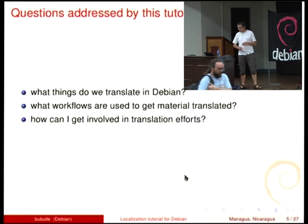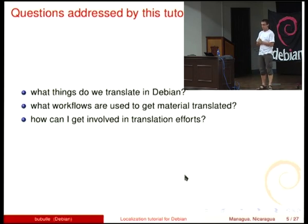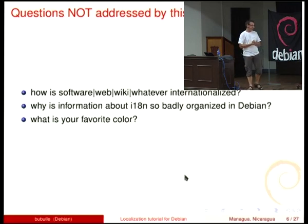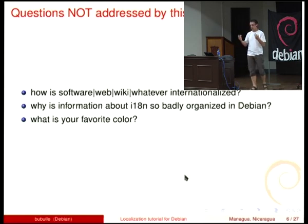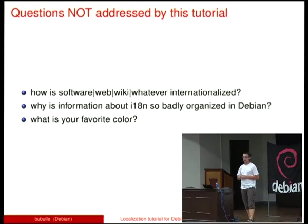About general stuff: what I need to address are the questions people might have when they want to get involved in Debian and contribute to localization or internationalization. What things do we translate in Debian? What kind of workflow are we using? And how can you be involved in that process? What I will not address is how the software, web, or wiki is internationalized or made translatable. And I will not answer what is your favorite color, because the answer, of course, is blue.